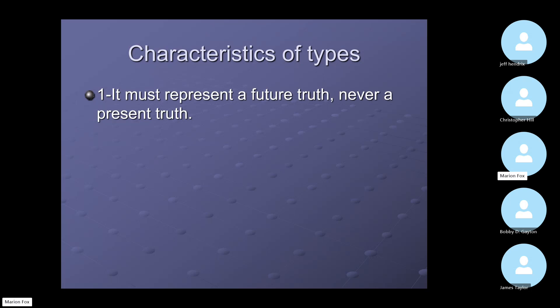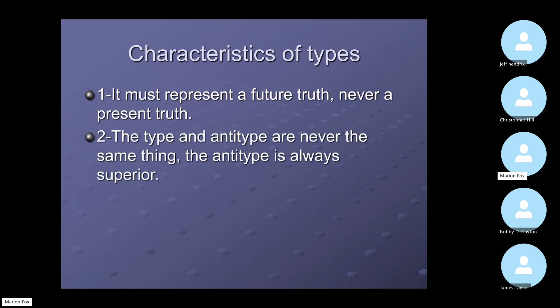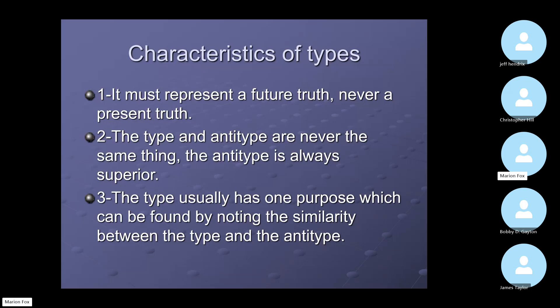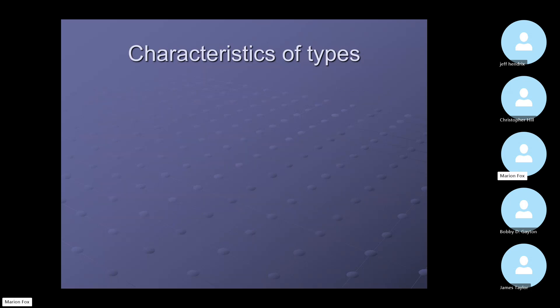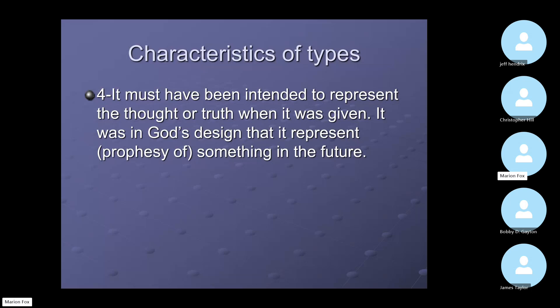Let's look at the characteristics of a type. It must represent a future truth, never a present truth. So it doesn't represent something presently existing — it's representing something in the future. A type and antitype were never the same thing; the antitype is always superior to the type, always. The type usually has one purpose, which can be found by observing the similarity between the type and the antitype. It must have been intended to represent that truth when it was given — it was in God's design that it represent or prophesy of something in the future.